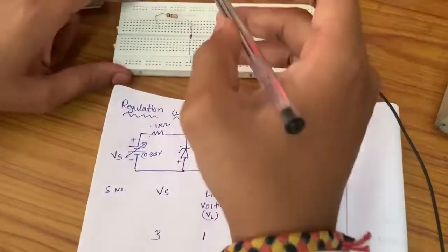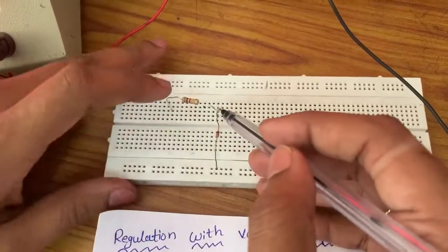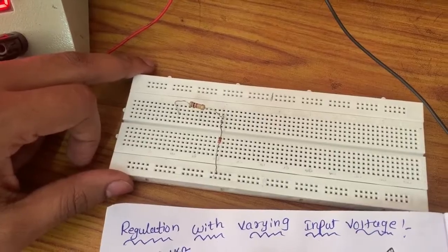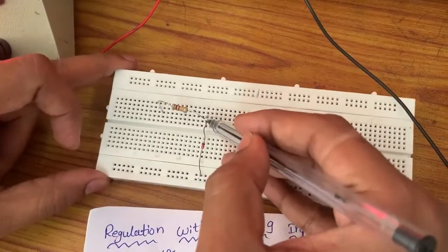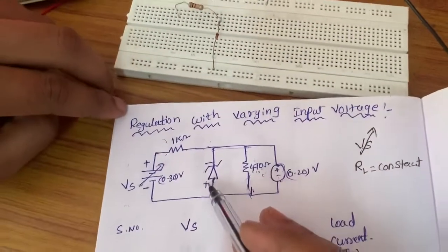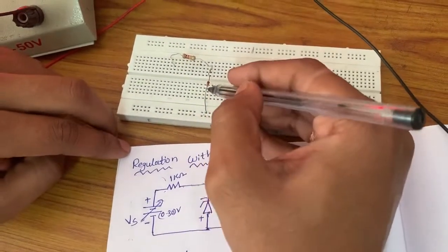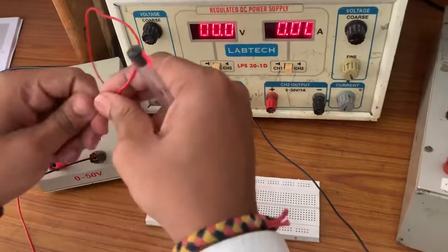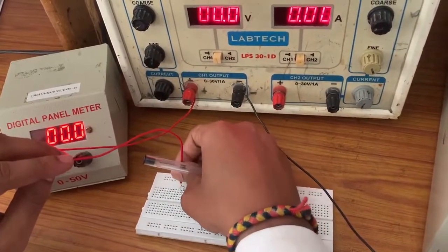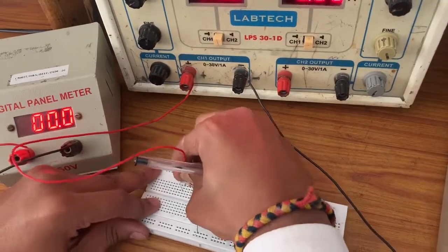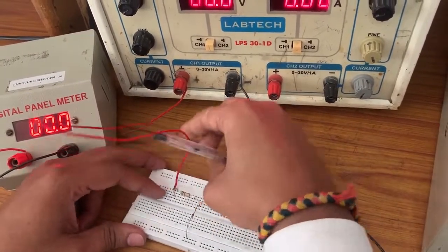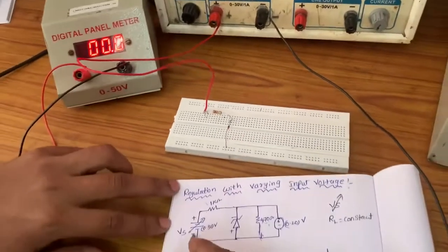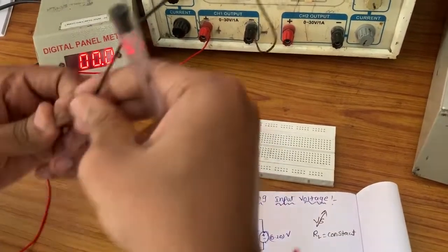We will connect the circuit as per the circuit diagram. The zener diode cathode is connected to one kilo ohm; the second terminal of the one kilo ohm is connected to the zener diode cathode. We will connect vertically next to the zener diode. The anode is connected to ground. Next, the RPS positive is connected to the one kilo ohm first terminal.